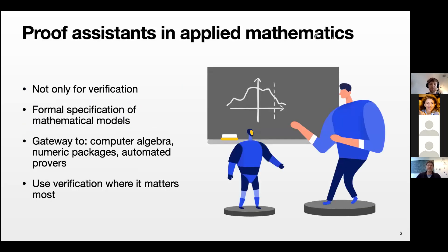The motivation for this project is to explore how proof assistants can be used by applied mathematicians for applied mathematics. Proof assistants cannot only be useful to formalize one big theorem, but they can also be used as tools in practice. For example, just specifying a mathematical model can be useful, or it can serve as a gateway to other systems like computer algebra systems, numeric packages, or automated theorem provers.